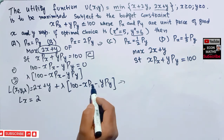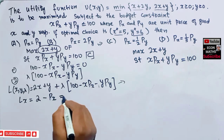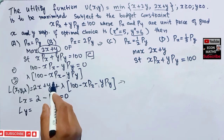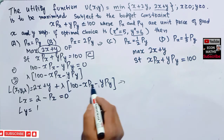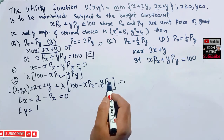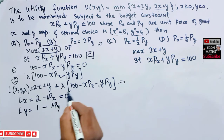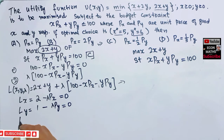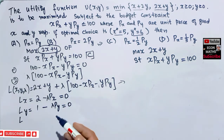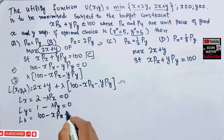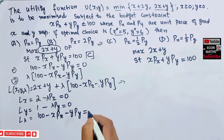Partially differentiating with respect to x: 2 − lambda·px = 0. Partially differentiating with respect to y: 1 − lambda·py = 0. Partially differentiating with respect to lambda: 100 − x·px − y·py = 0. These give us three equations to solve for the optimal values.